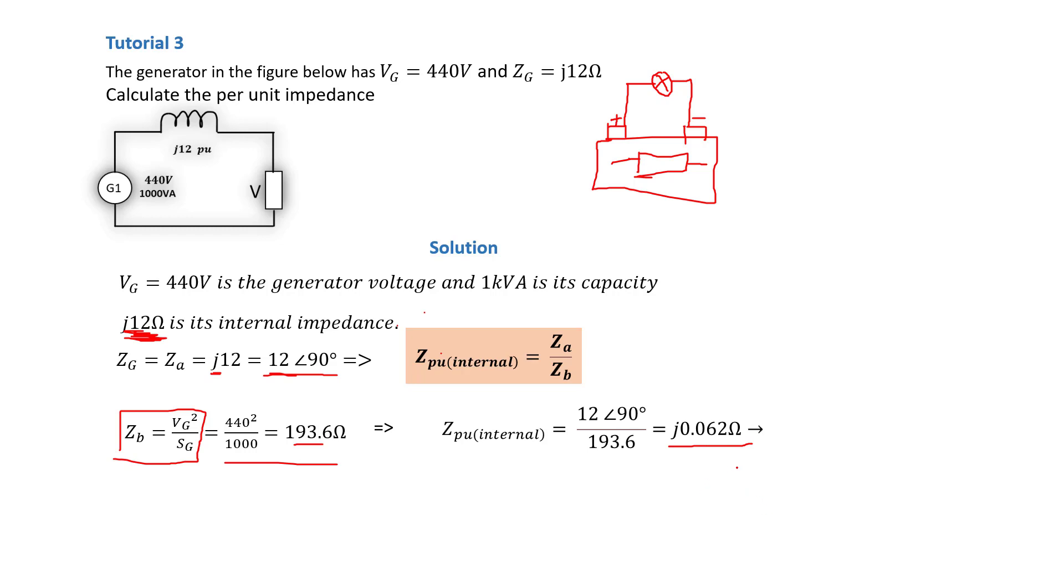What does this mean? This means this generator has this per unit value. Now using this per unit value you can calculate what the maximum fault current can flow in this generator.